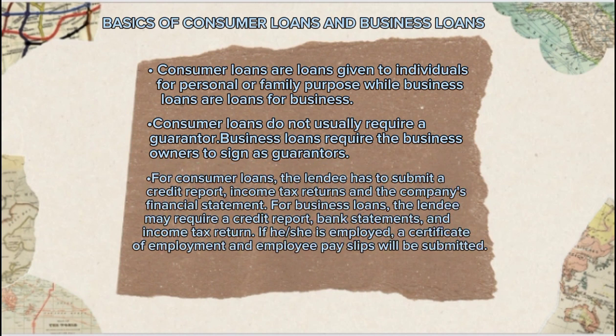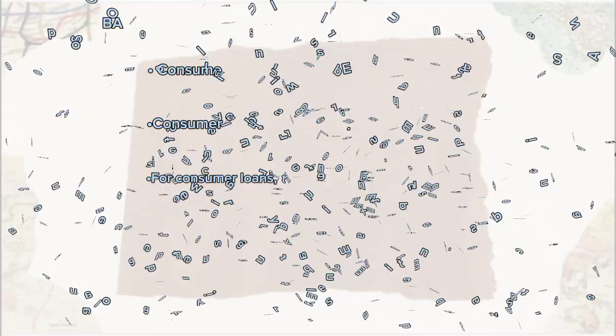Another difference is in documentation. For consumer loans, the lender has to submit a credit report, income tax return, and the company's financial statement. While for business loans, the lender may require a credit report, bank statement, and income tax return. If he or she is employed, a certificate of employment and employee pay slips will also be submitted.